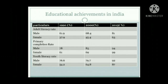Educational achievement in India: the adult literacy rate has increased from 1990 to 2014. The male literacy rate went from 61.9% in 1990 to 68.4% in 2014. In primary completion rate, males achieved positive gains and females improved from 61% in 1990 to better levels in 2015. Youth literacy for females was 54.2% in 1990 but improved to 87% by 2015, showing significant improvement.